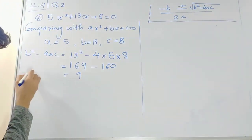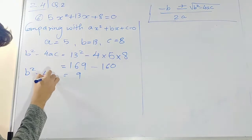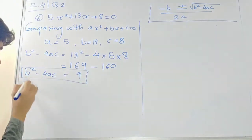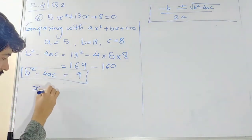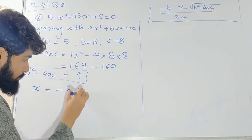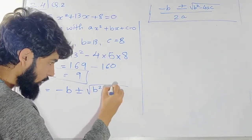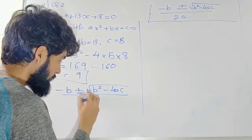Now we have values. So your b² minus 4ac is equal to 9. Now what are we going to do? x is equal to formula: minus b plus or minus square root of b² minus 4ac divided by 2a.